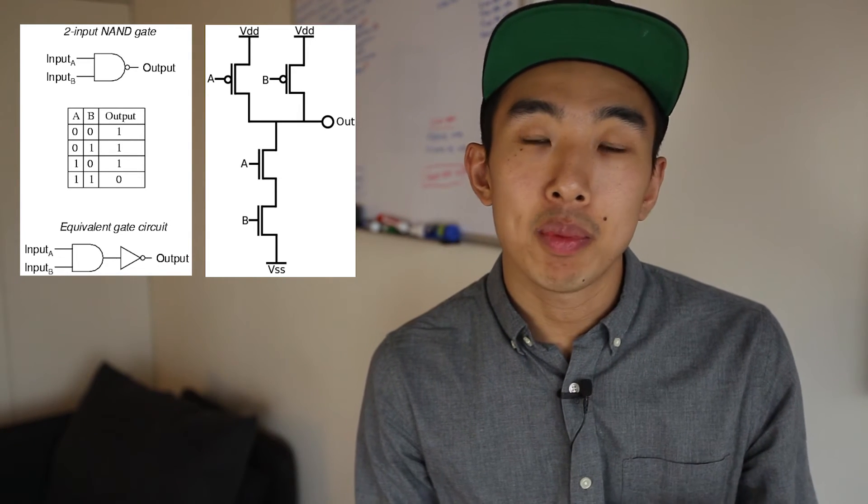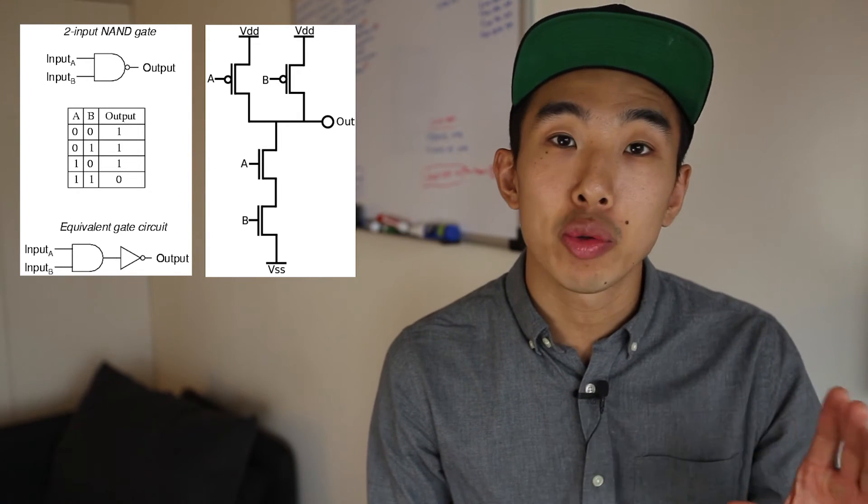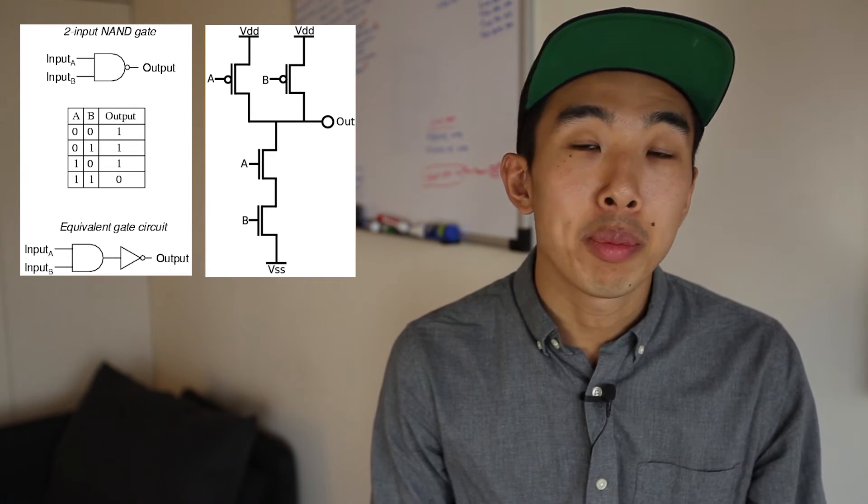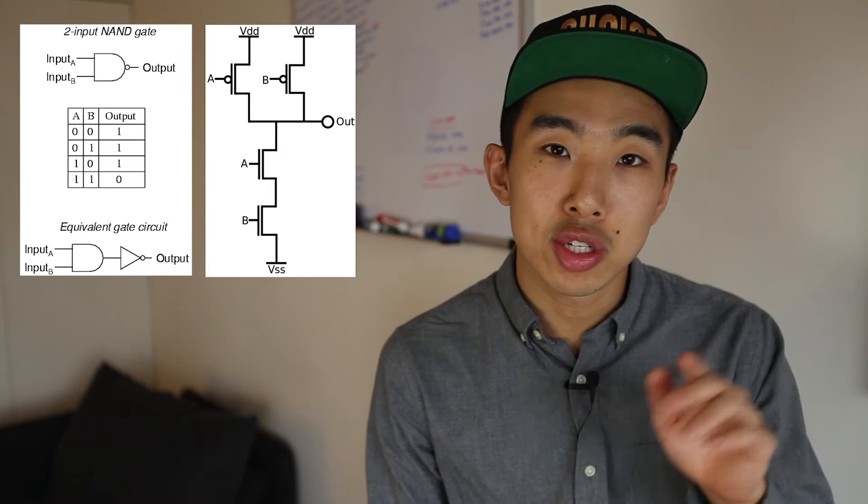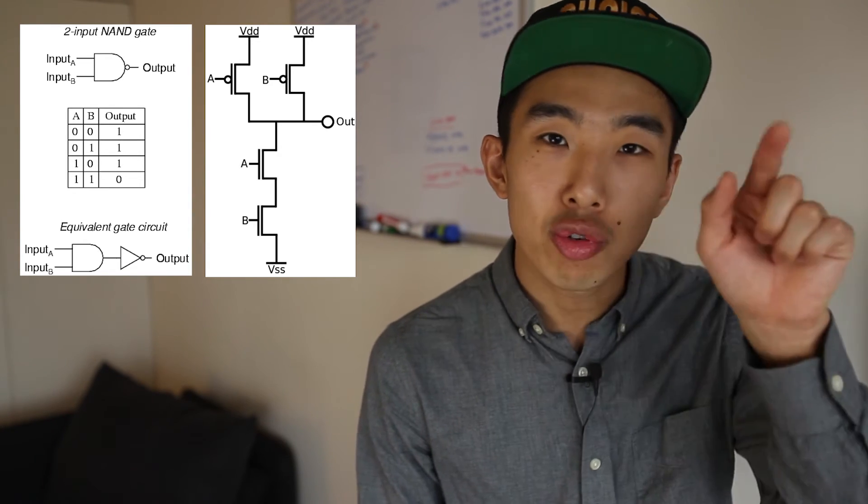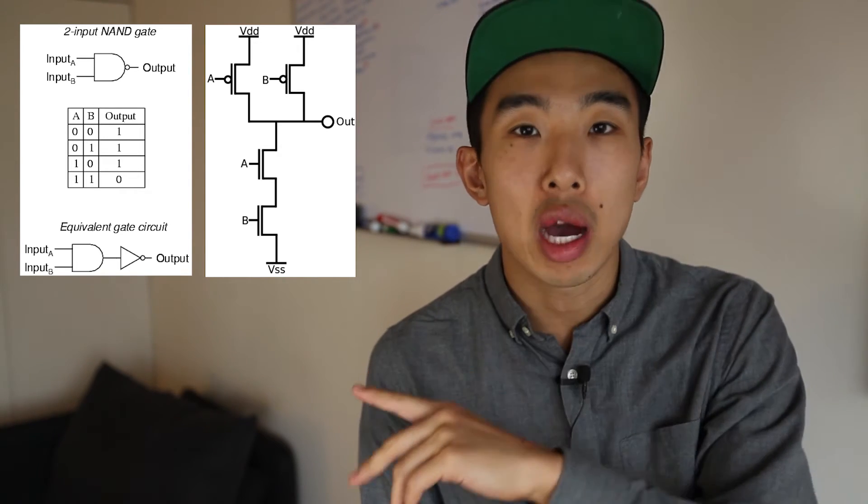Actually, for the NAND gate, the only way for the output to be zero is if both inputs are actually one, all right? And every other combination, the output is actually going to be one. And I'll leave it to you guys as an exercise to just follow that flow with the CMOS diagram and just trace, kind of trace with your fingers almost, how the electricity flows from input to output.